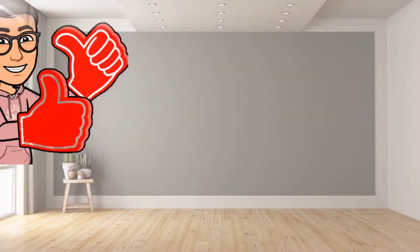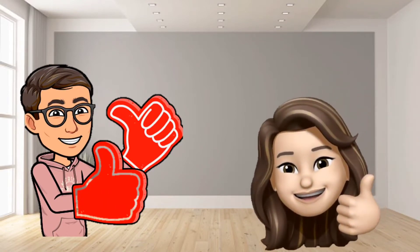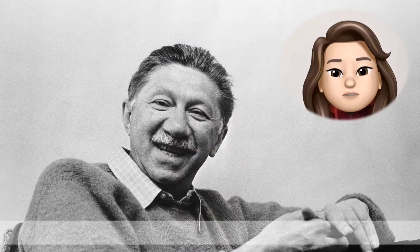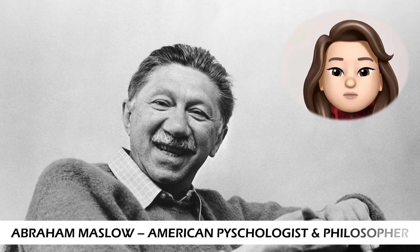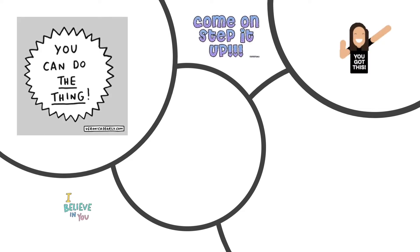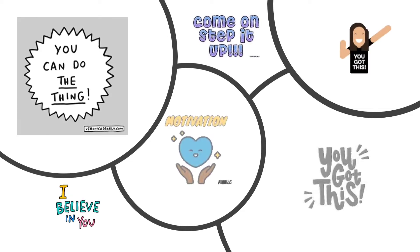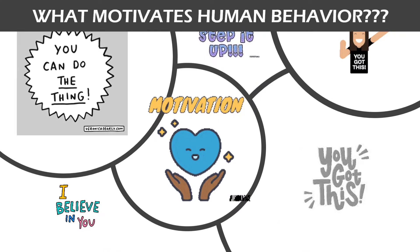Sure Q, in today's video we will learn about Maslow's Need Hierarchy Theory. Sounds interesting. Can we get started? Absolutely. Who is this Maslow and what is this theory about? Abraham Maslow was an American psychologist and philosopher best known for his theory of motivation. Maslow's Hierarchy of Needs is one of the best known theories to explain the question: what motivates human behavior?